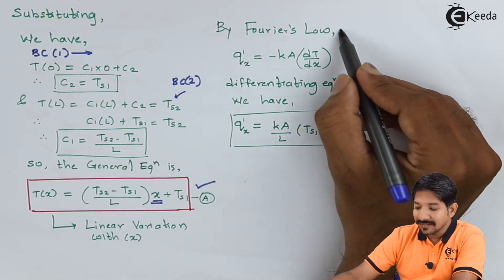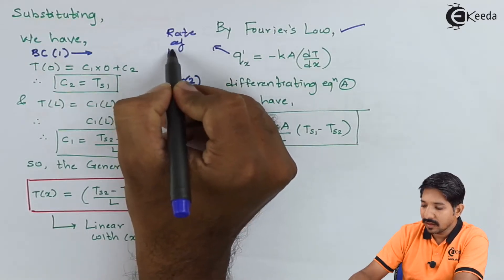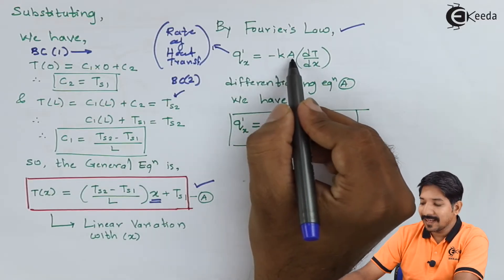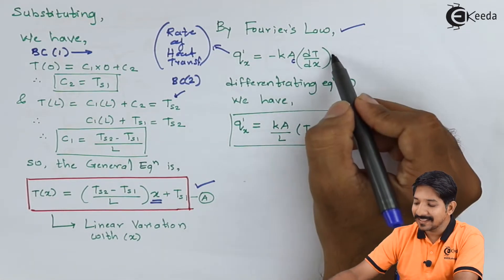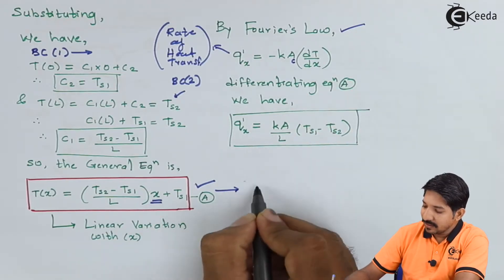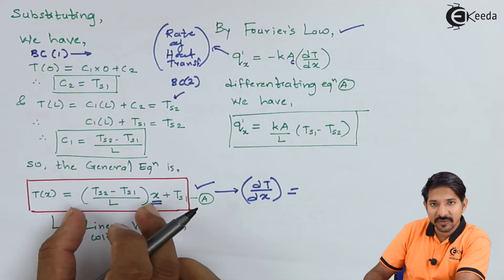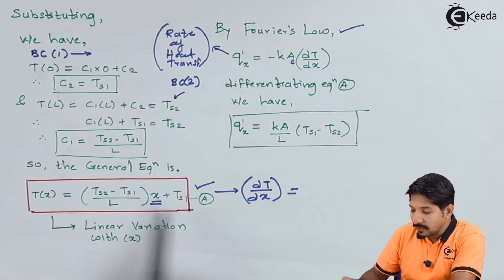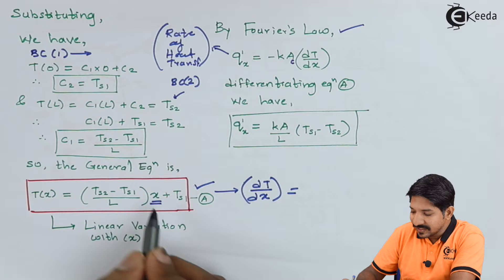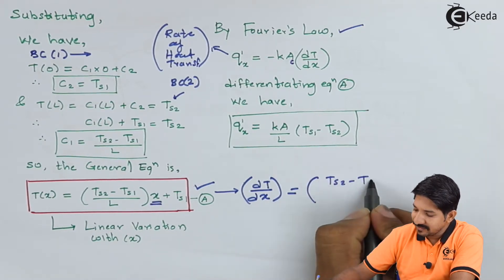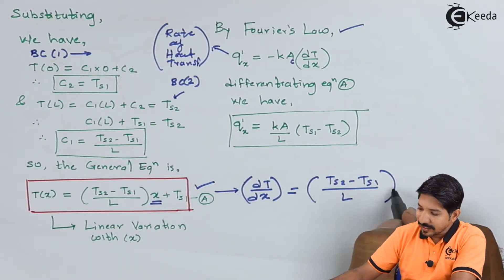Now let us use Fourier's equation: Q(x) = −K·A·(dT/dx), where A is the cross-sectional area. If I differentiate equation 1 with respect to X, only the first term has variable X, so dT/dx = (Ts2 − Ts1) / L. The second term is a constant, so its derivative is 0. Now I put this into the main Fourier equation.